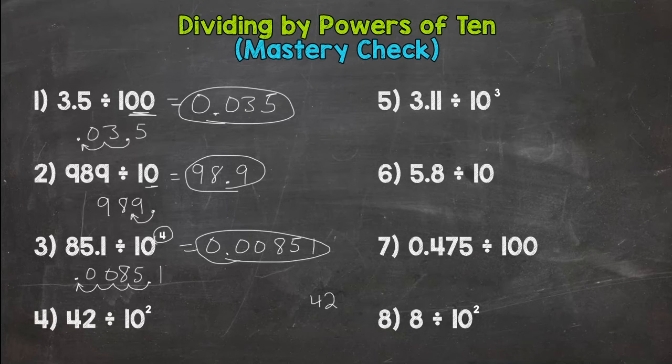42 divided by 100, or divided by 10 to the second power. We need to move the decimal twice: one, two. So we get 0.42 or forty-two hundredths. That's our halfway point. Hopefully you have three or four correct out of those four.